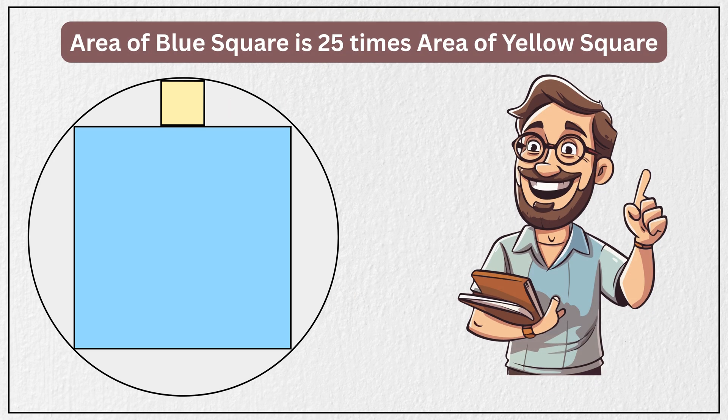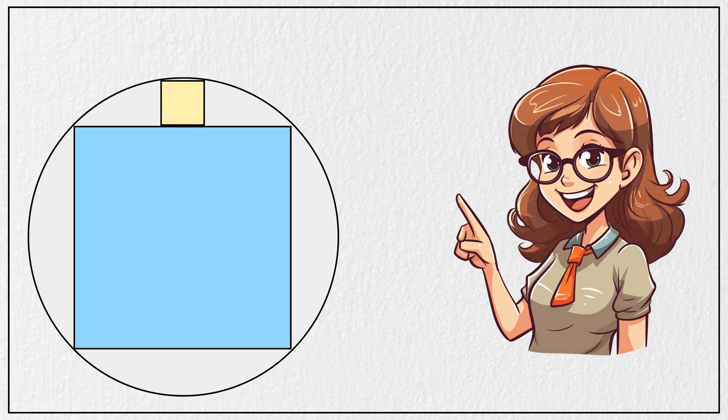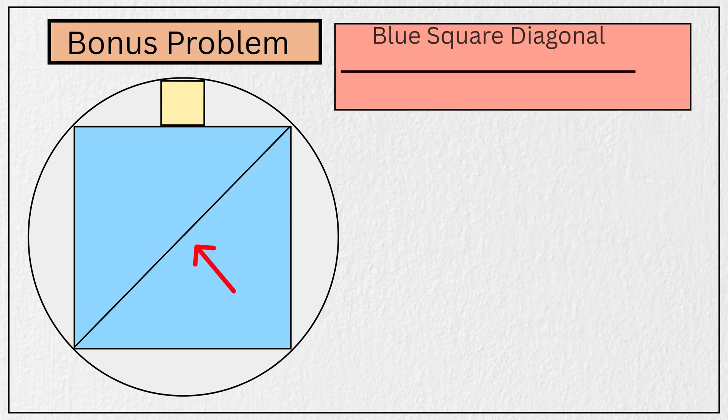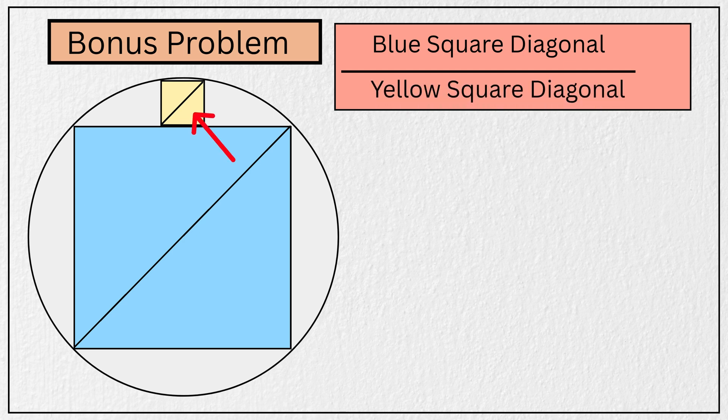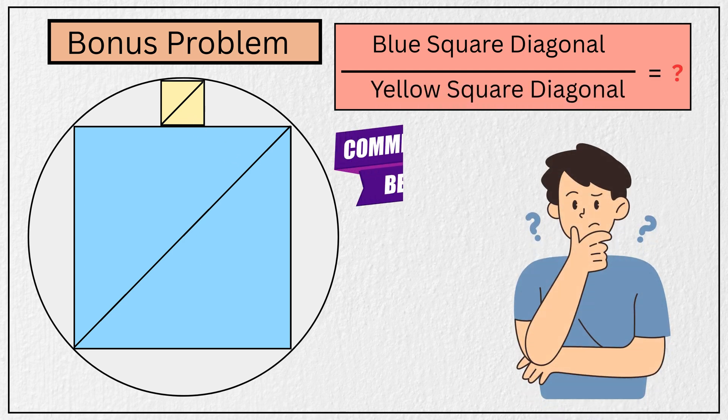Pretty amazing, right? But wait, before you go, I have a quick bonus challenge for you. Can you find the ratio of the diagonal of this large square to the diagonal of the small square? Think it through and drop your answer in the comments below. Let's see who can figure it out.